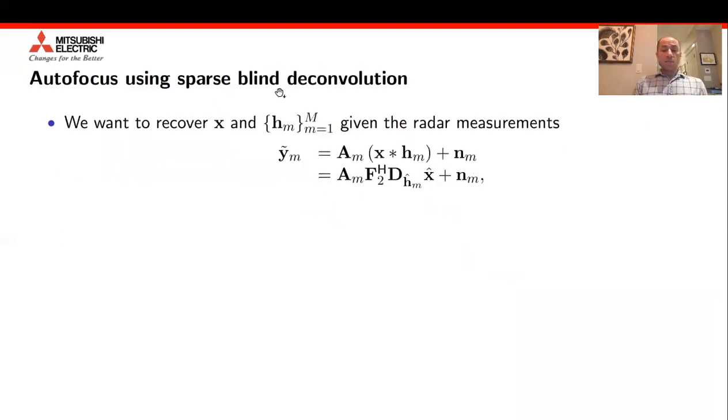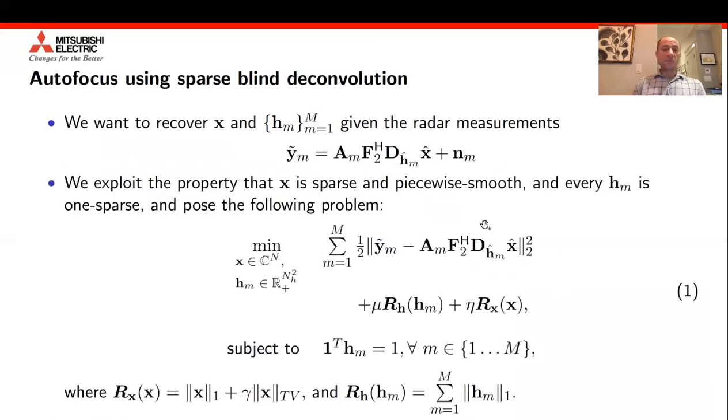As a result, we can represent the set of measurements Y tilde as the given radar operator A_M that multiplies the convolution of the unknown image X with an unknown shift kernel H_M. That could be reformulated in the Fourier domain, replacing the convolution with matrix vector products. We formulate the entire problem as a sparse plane deconvolution problem in both X and the set of all shift kernels H_M, where we minimize the measurement mismatch. We add regularizers for each of the shift kernels H_M and for the radar scene X that make the problem well posed.